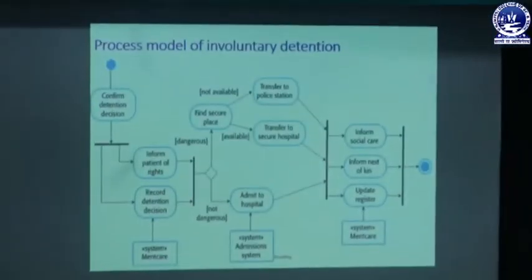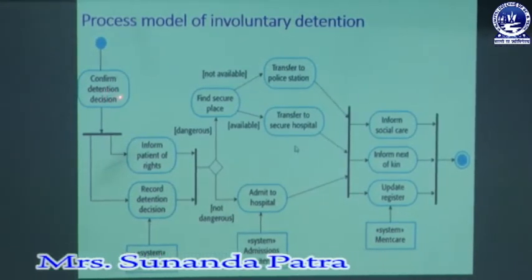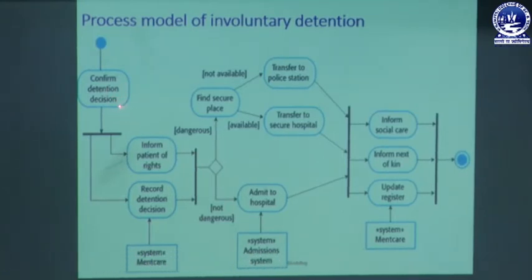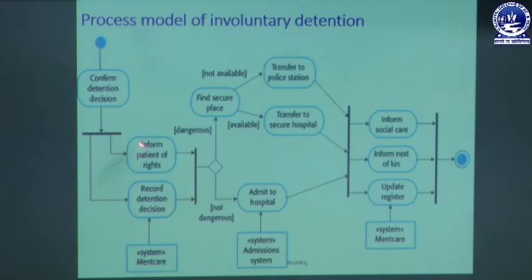Let's look at the process model for involuntary detention. When we confirm the detention decision — meaning the patient is suffering with a serious problem and may be dangerous — we cannot keep the patient with their family. We need to admit the patient into the hospital or find a secure place and transport the patient to that secure place. After confirming the detention decision, we inform the patient of their rights.